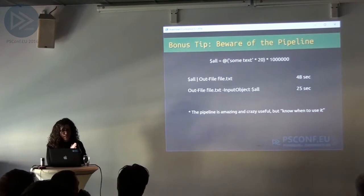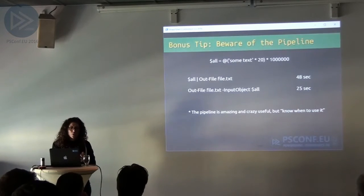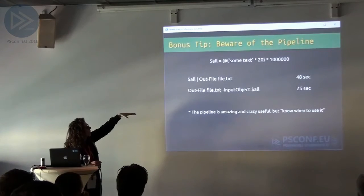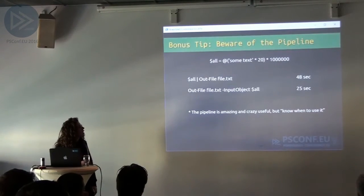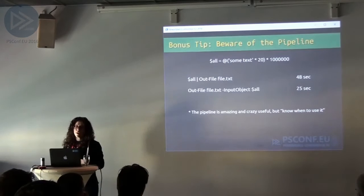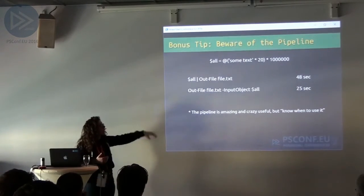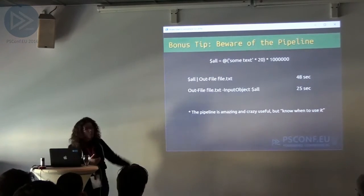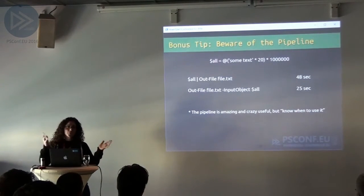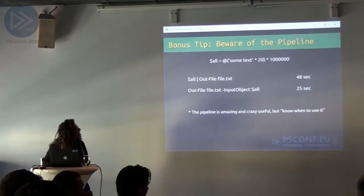Beware of the pipeline. I was watching some performance videos and Dr. Tobias wrote this: if you pipe output to Out-File file.txt, it'll take 48 seconds, but if you use the InputObject dollar-sign all instead, it'll be 25 seconds. This is the difference between set-based thinking, which is the second line, and row-by-agonizing-row, which is the first line. The pipeline is super amazing and crazy useful, but Dr. Tobias said know when to use it.